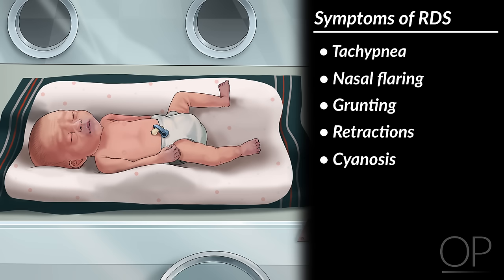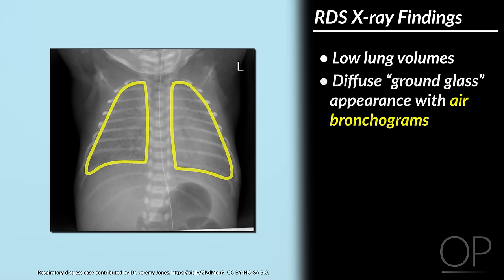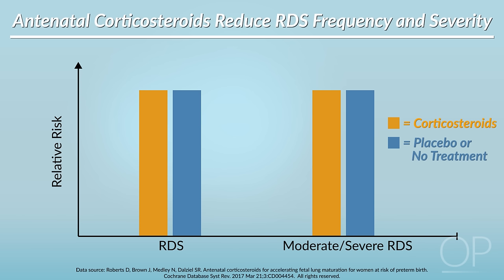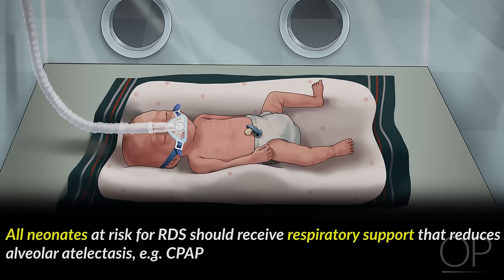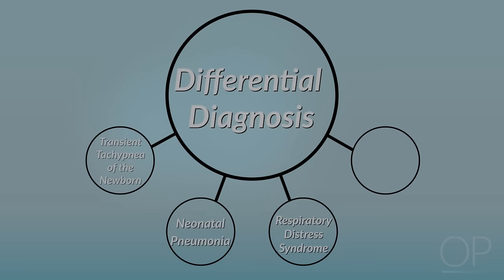retractions, and cyanosis. In particular, infants with RDS often grunt in order to generate positive pressure to keep alveoli open. Chest x-ray typically demonstrates low lung volumes, as well as a classic diffuse ground glass appearance with air bronchograms. Many studies have demonstrated that RDS is both less common and less severe if corticosteroids are administered to the mother prior to a preterm delivery. All neonates at risk for RDS should receive respiratory support that reduces alveolar atelectasis, most commonly CPAP. If persistent severe respiratory distress is noted, infants are intubated and surfactant is given via the endotracheal tube.